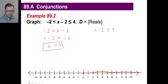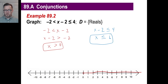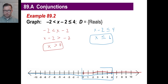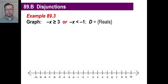Let's do the other one. If you move this over, it'll be x is less than or equal to 6. We're allowed to use reals, so at 6 we can do the filled-in dot. So less than or equal to 6 looks like this. There's your intersection right here — this part is the answer, where those both meet.